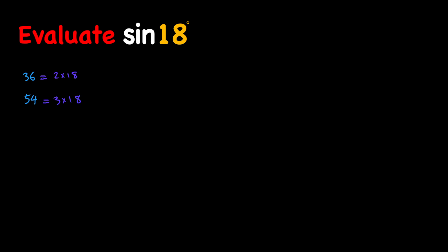Secondly, their sum — 54 plus 36 — equals 90, which means that 36 degrees and 54 degrees are complementary angles. This means that sine of one of them equals cosine of the other one. So I can write that sine of 36 degrees equals cosine of 54 degrees, or that sine of 54 degrees equals cosine of 36 degrees.